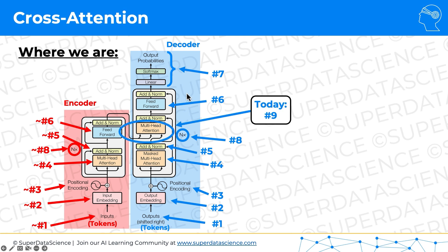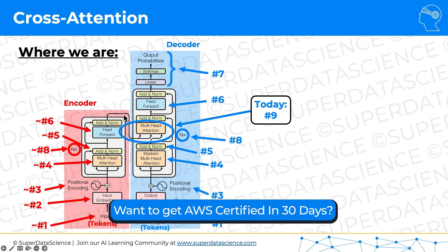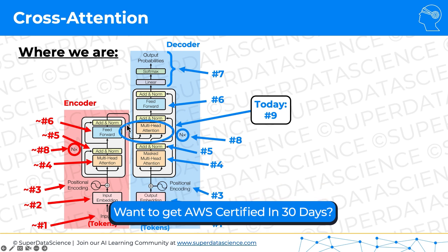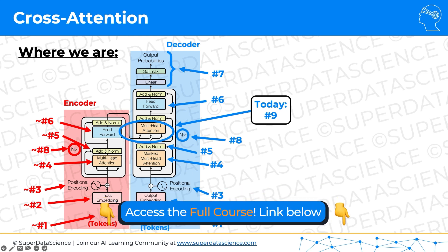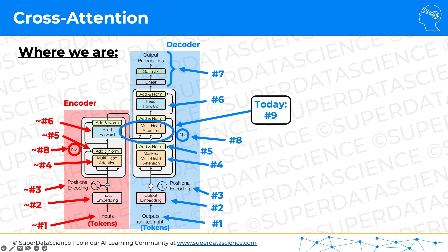We can find it over here. It's called cross-attention because some of the arrows come from the decoder and some of the arrows come from the encoder. This is a very important component of the transformer architecture because that's where the encoder and decoder connect. Let's dive straight into it.